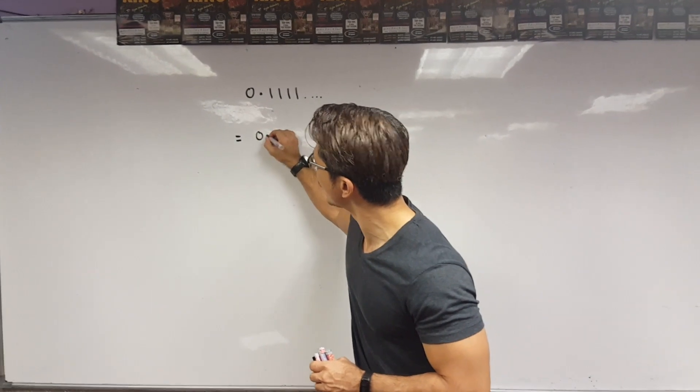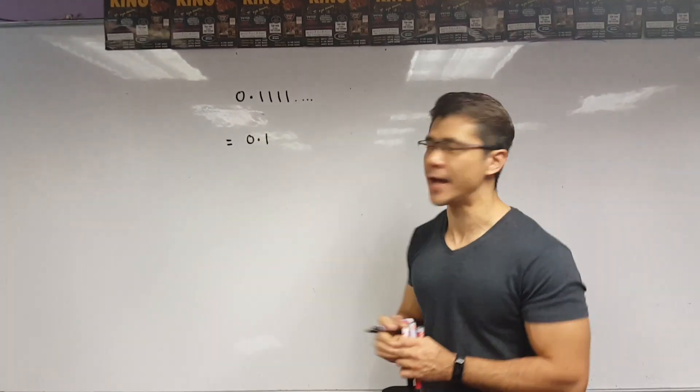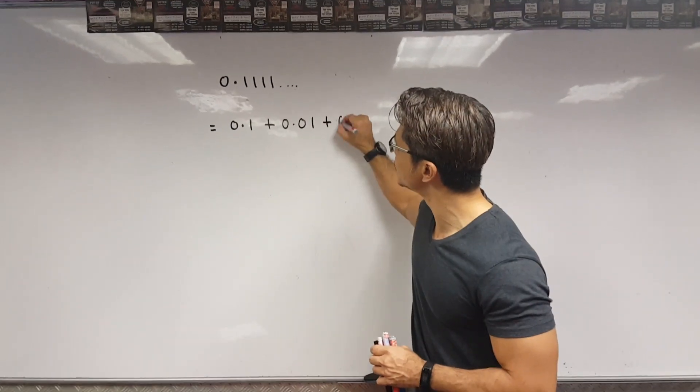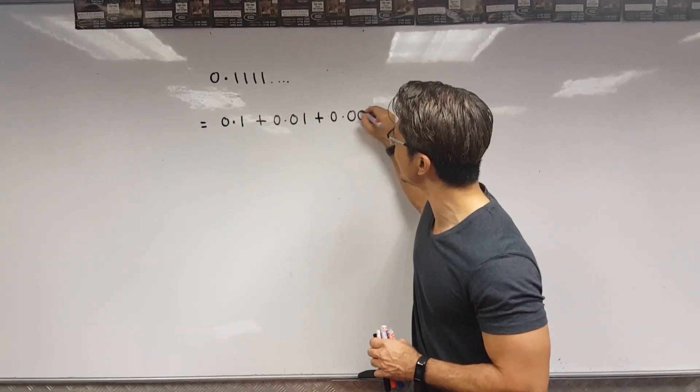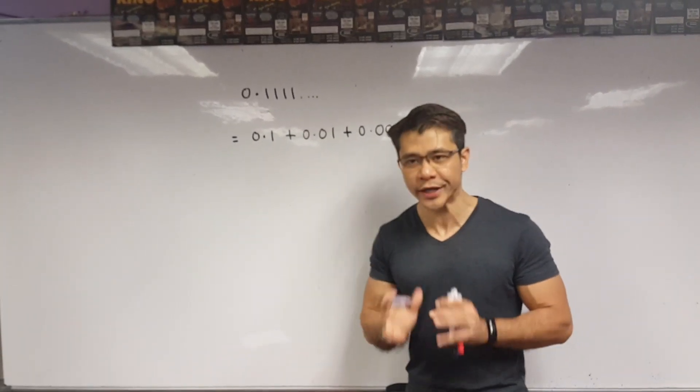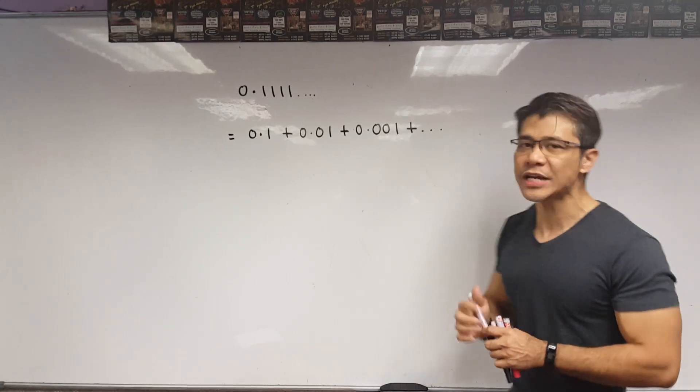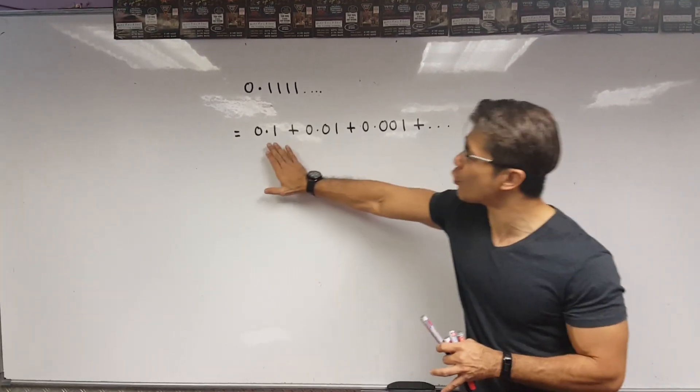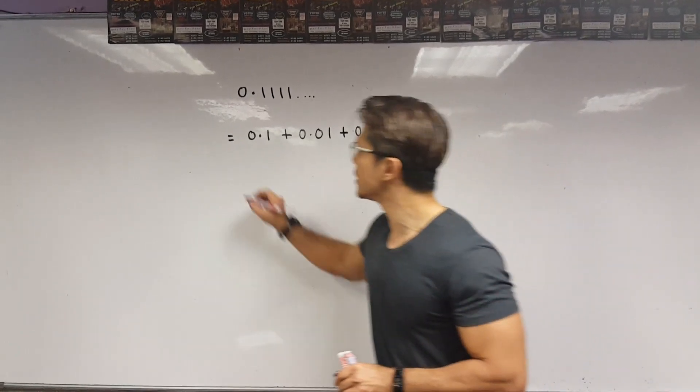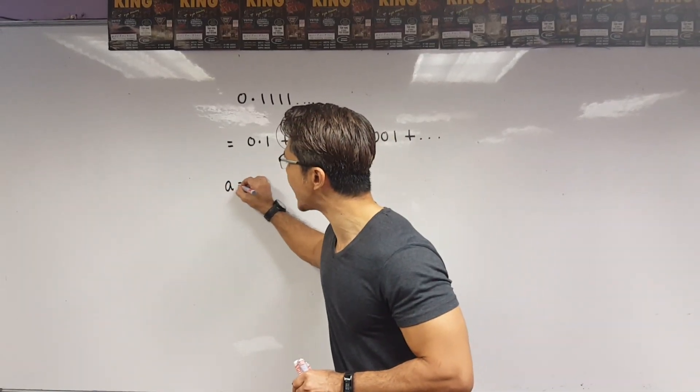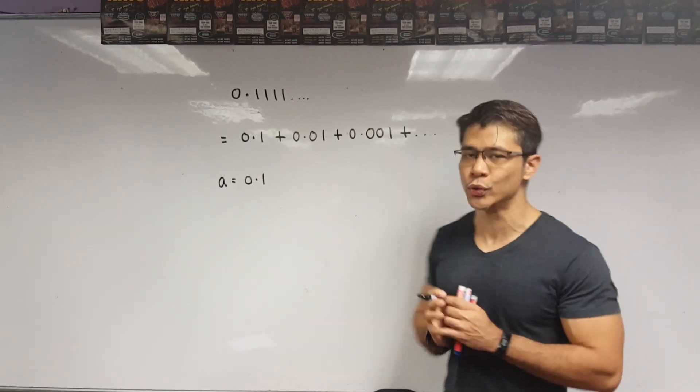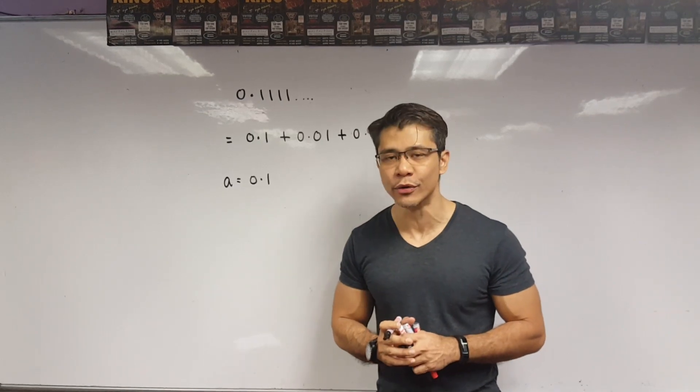So, I have 0.1 and then plus 0.01 plus 0.001 plus and it goes on and on. You get the idea, right? Now, the first thing we have to understand is that 0.1 over here is the first term or the first number. So, which means first term or A is equal to 0.1 and I need to determine its common ratio.